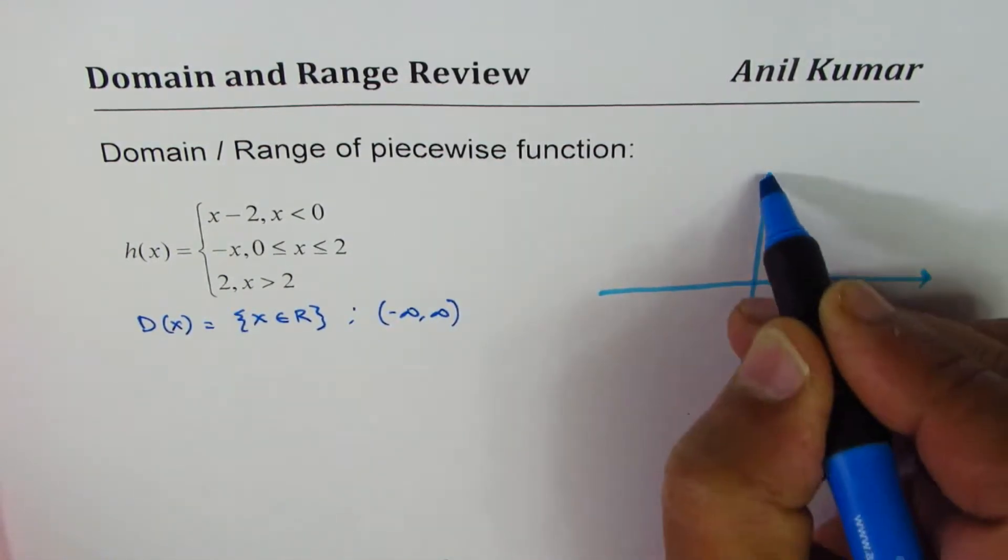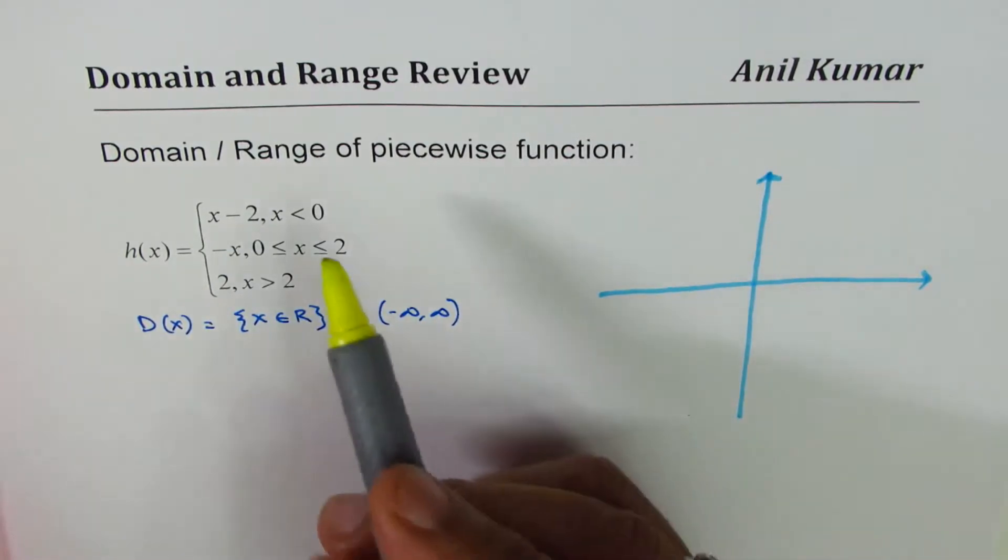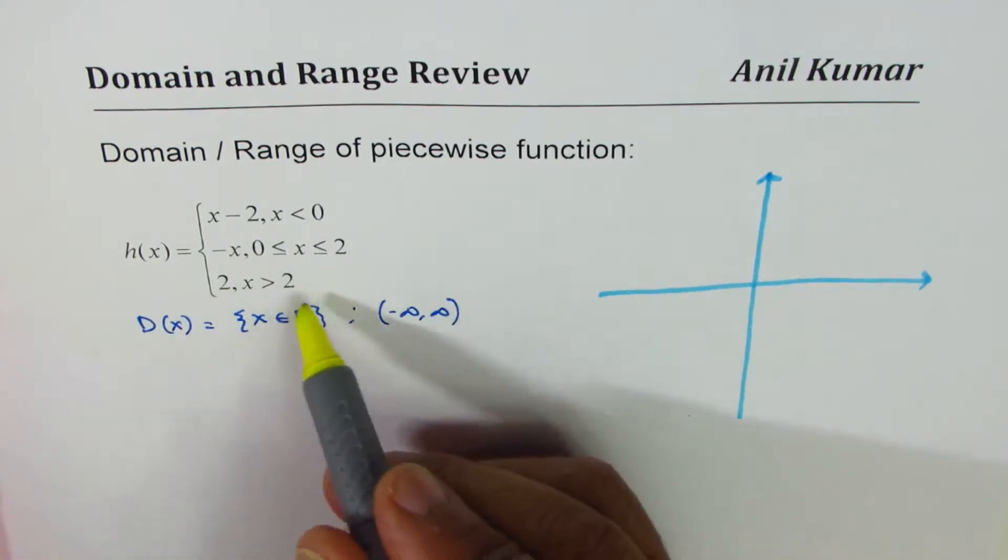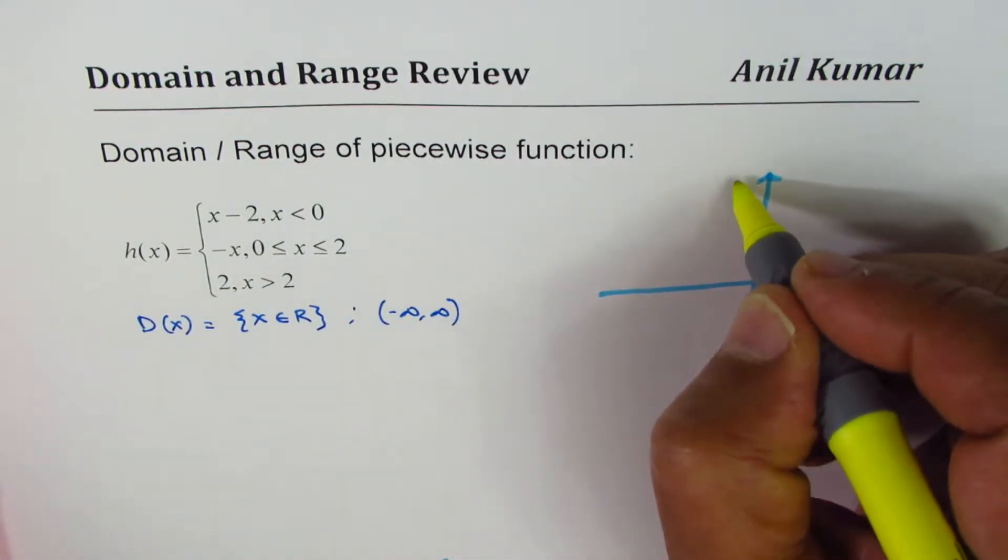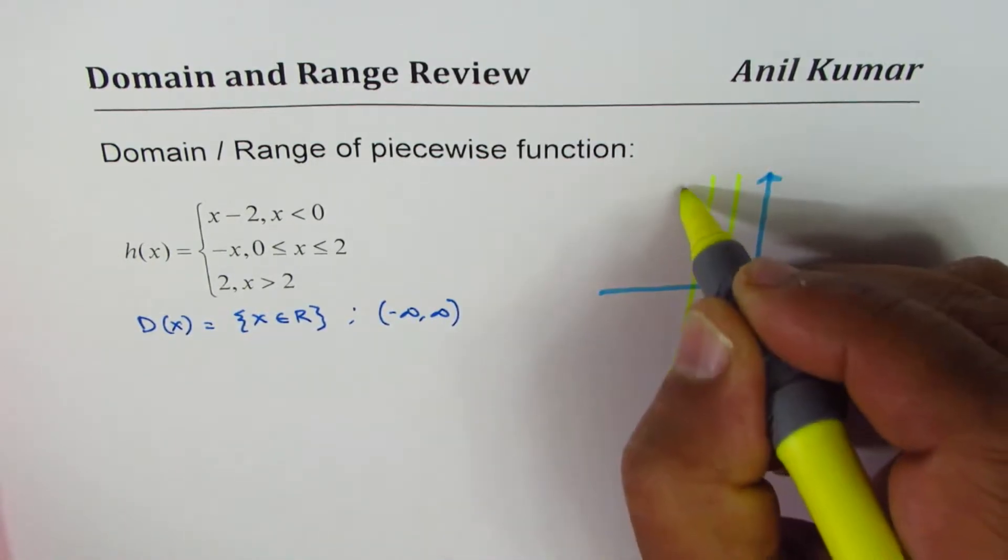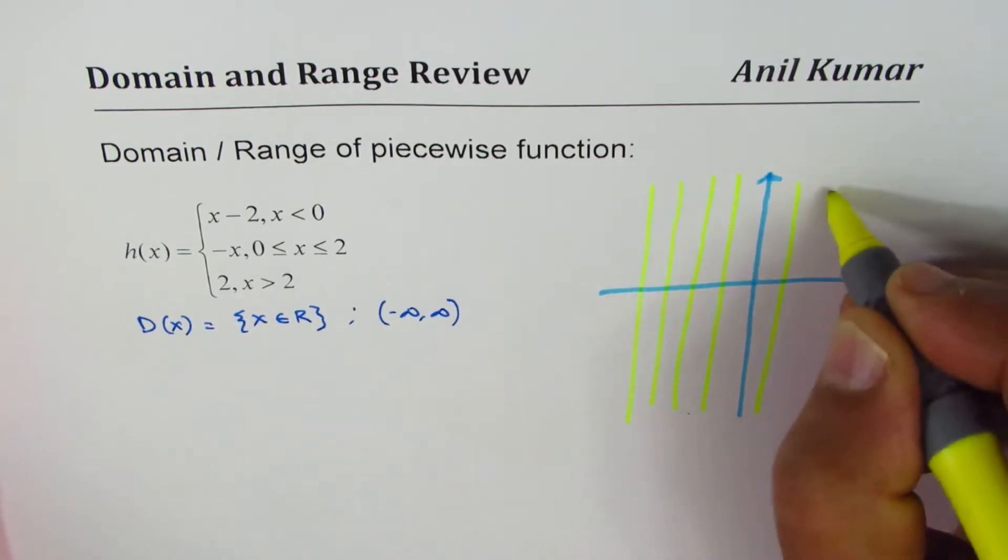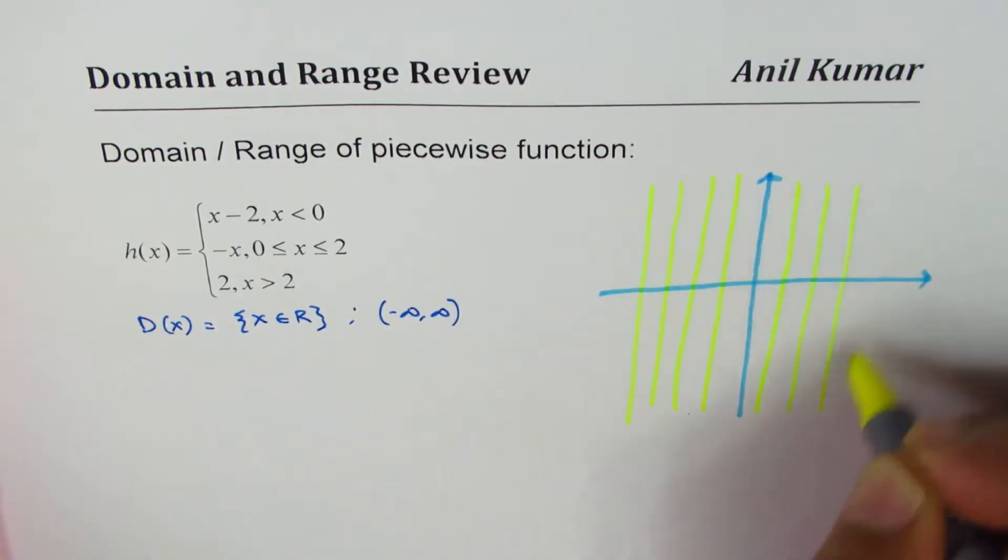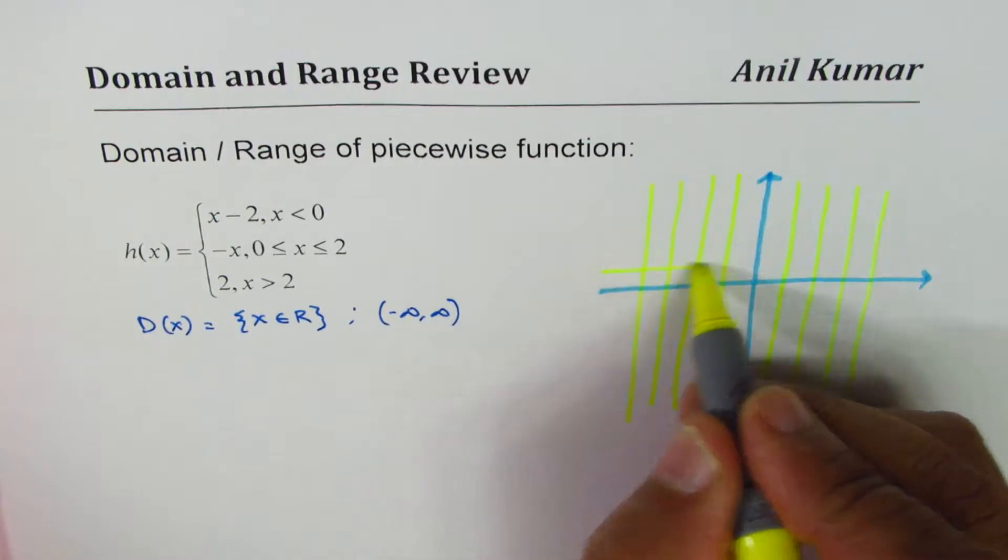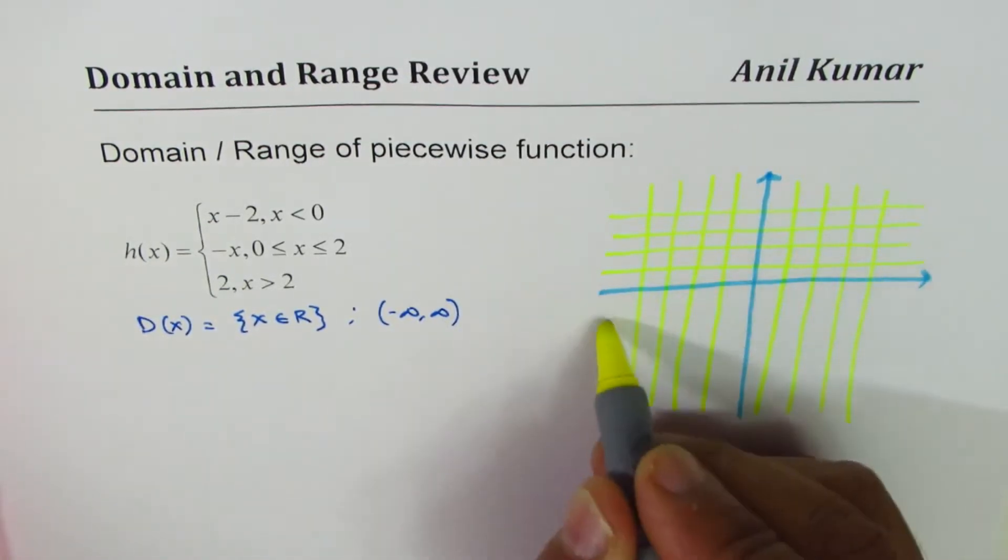Let me sketch the function now and then we'll get back to both domain and range. We're looking for values which are less than 0 then greater than 2. So let's say this is our grid, these are spaced one unit apart, and then let me draw these so that becomes a grid for us.